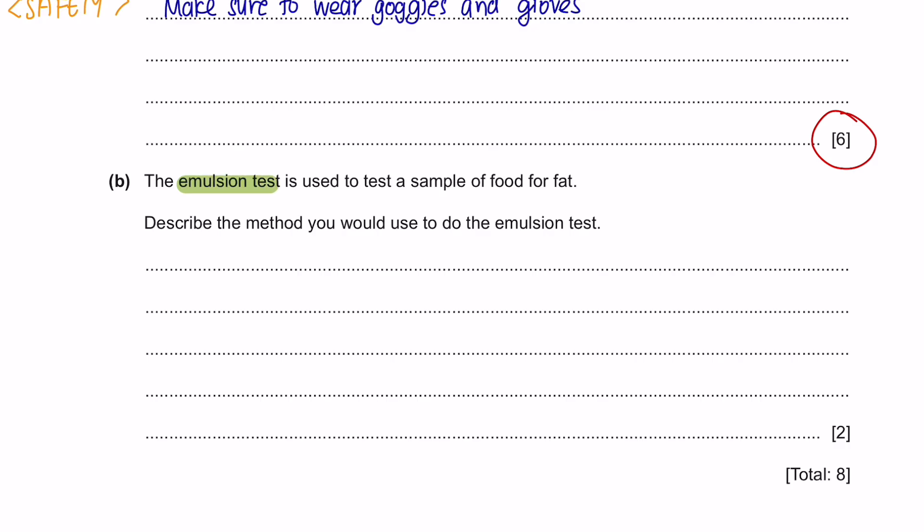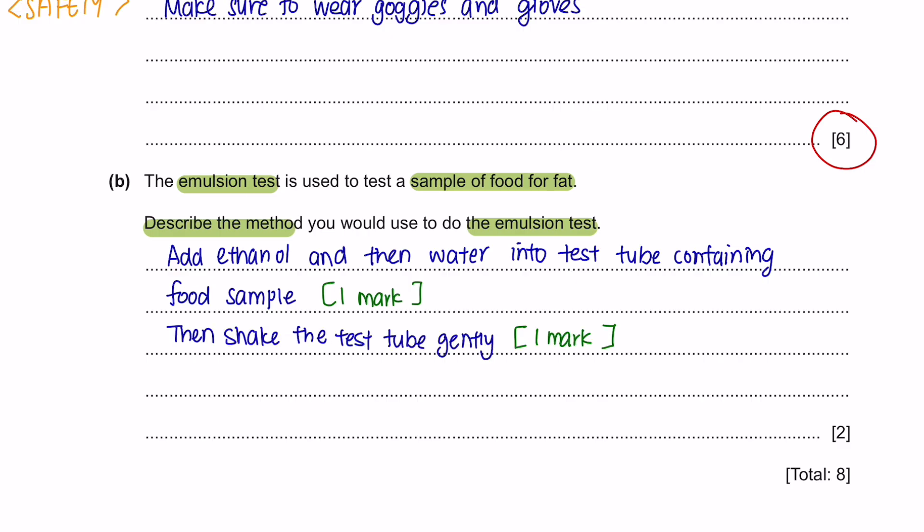The emulsion test is used to test a sample of food for fat. Describe the method you would use to do the emulsion test. This is under the chapter of biological molecule food test. You should know that to do the emulsion test, you're going to add ethanol. So we can add ethanol and then water into the test tube containing the food sample and then gently shake the tube and observe the changes.